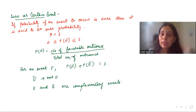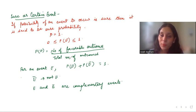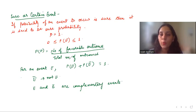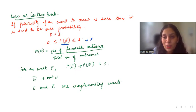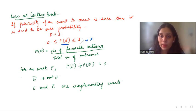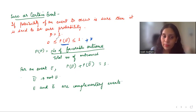On the other hand, we have a sure or certain event. If the possibility of an event occurring is 100% sure, then it is called a sure event and the probability is always equal to one. The sum of all the probabilities is always one. The probability P(E) of an event always lies between zero and one — you cannot have less than zero or more than one. Zero is an impossible event; one is the sure or certain event.